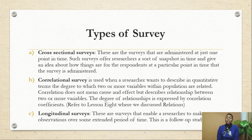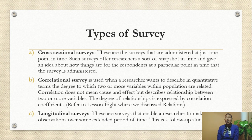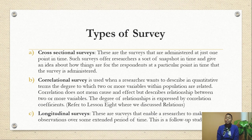We have three main types of survey. The first is cross-sectional survey — surveys administered at just one point in time, giving a snapshot and an idea of how things are for respondents at that particular moment. The survey that describes the characteristics of a population at a particular point in time is called a cross-sectional survey.